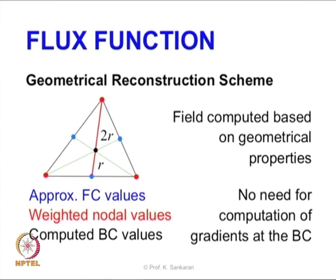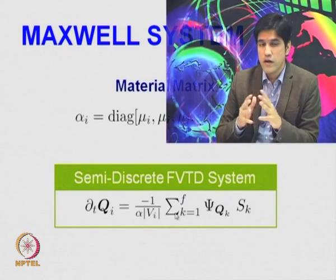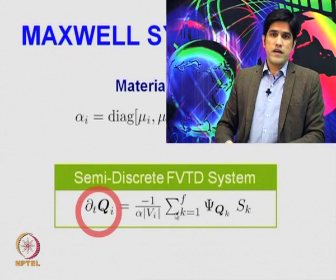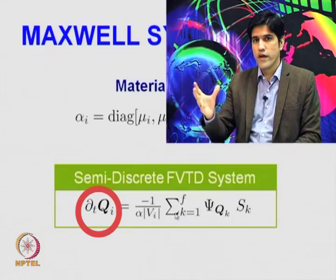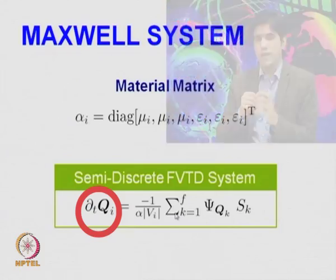Having discussed the various approaches for computing fluxes, the most important thing now is to look into time discretization itself. So far we have not talked about time discretization, which is one of the main chunks of the computation, because doing only spatial discretization does not help. We also need a time discretization scheme that is simple but at the same time stable. Schemes like the Euler method are not very stable and mostly considered unstable.